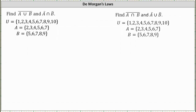In this example we are given the universal set as well as sets A and B, and asked to determine the complement of the union of A and B, as well as A complement intersect B complement. We're also asked to find the complement of the intersection of A and B, and A complement union B complement.